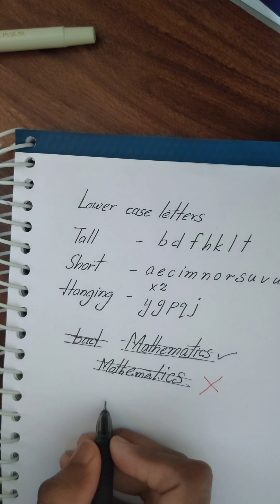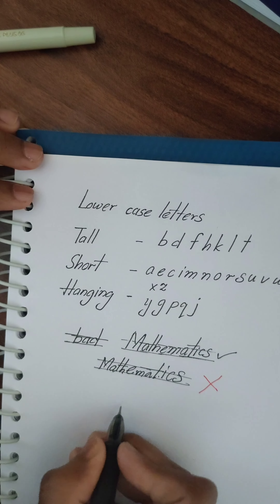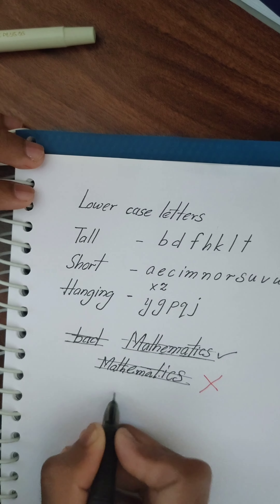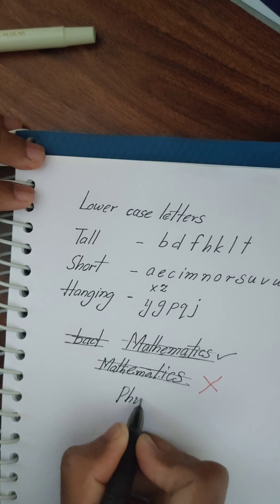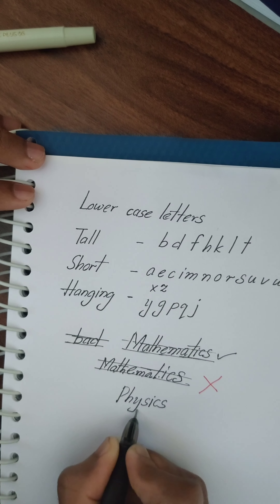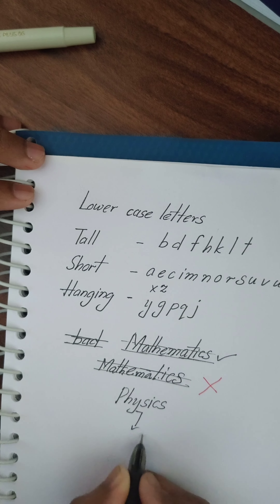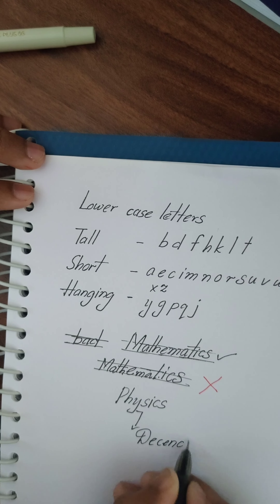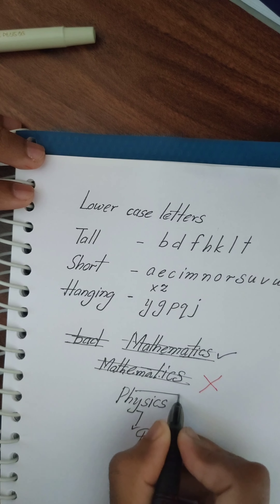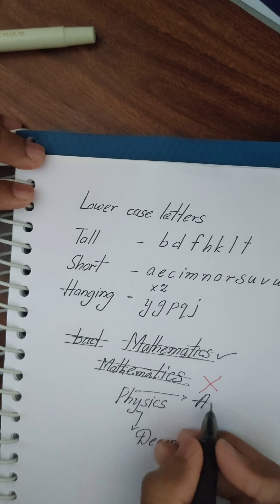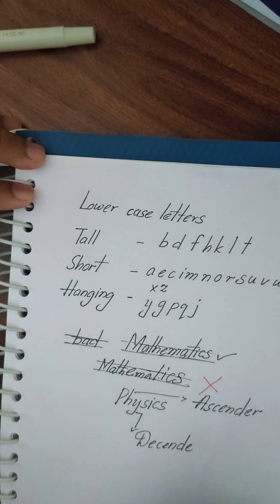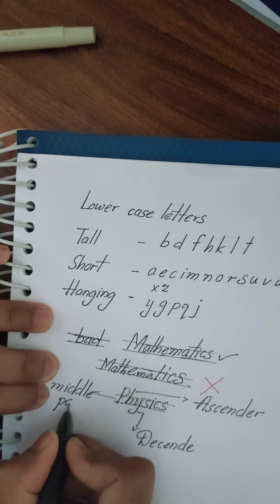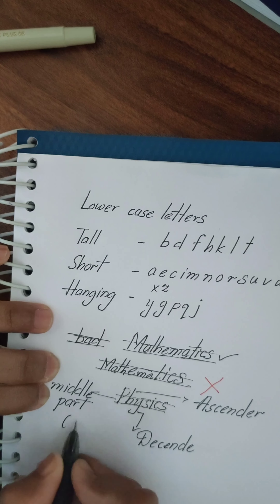This is another example: the word 'physics'. It has a descender as well as an ascender. The middle part is equal throughout the word. Here are two more examples shown for reference.